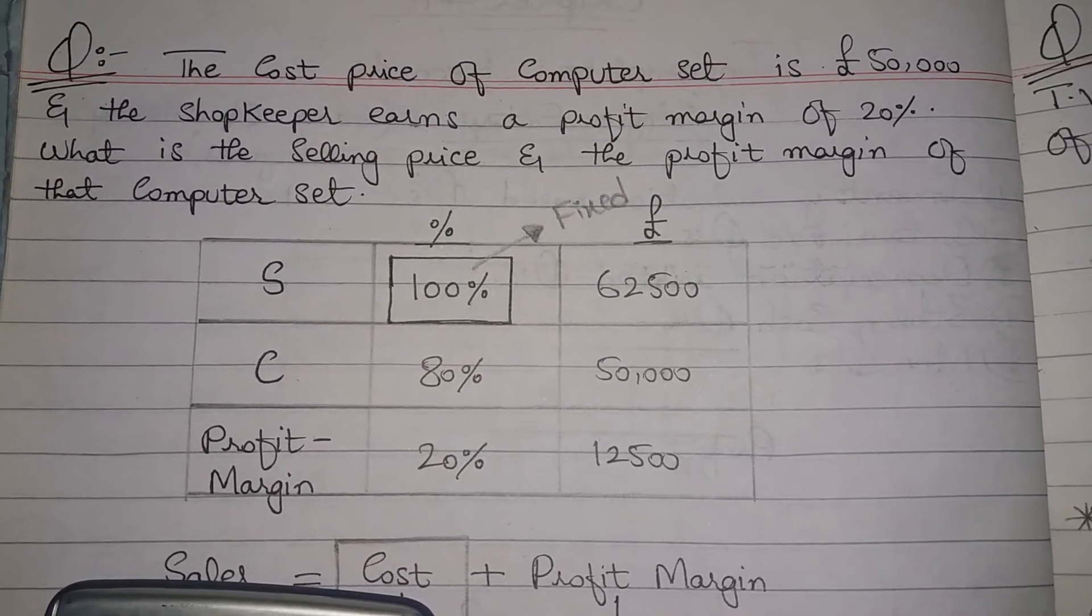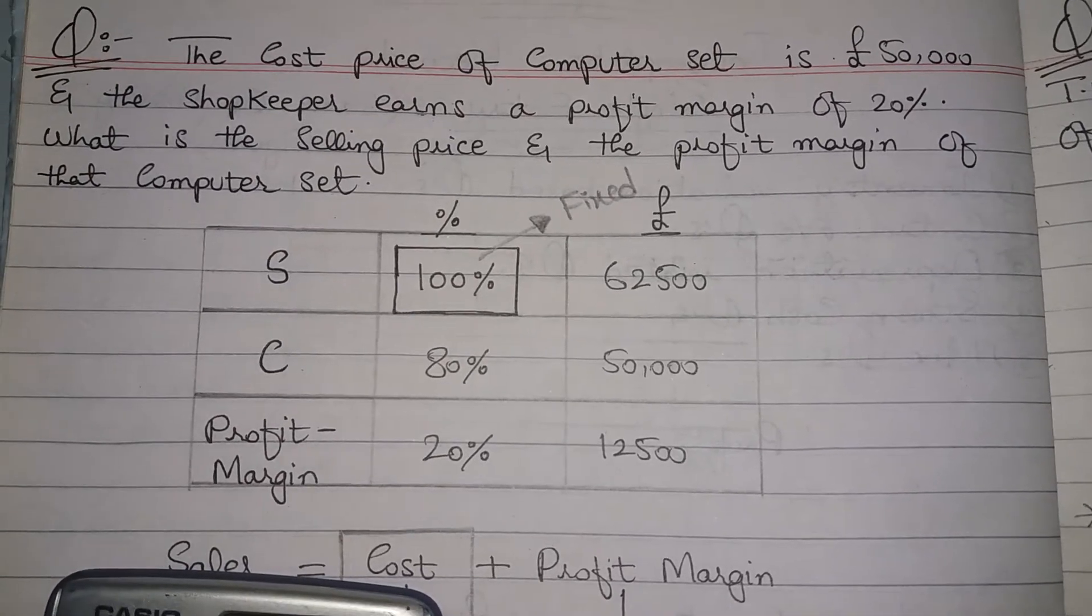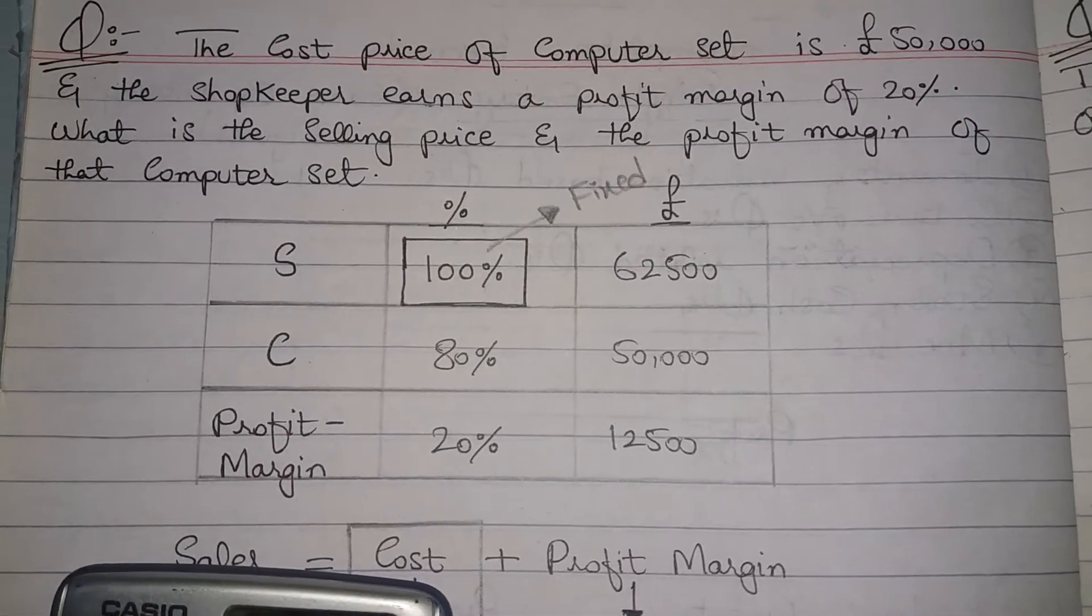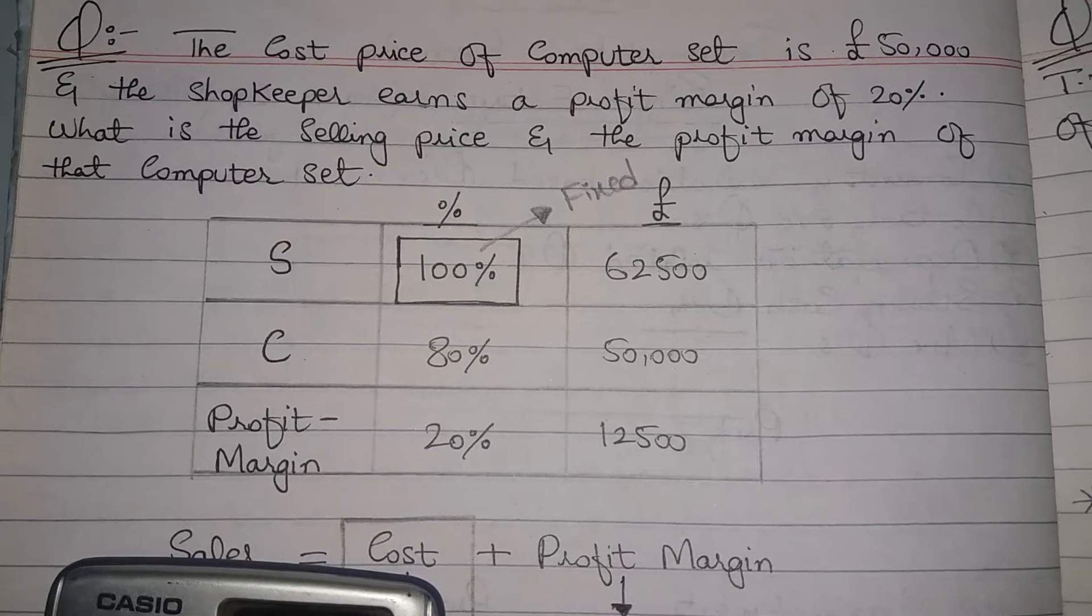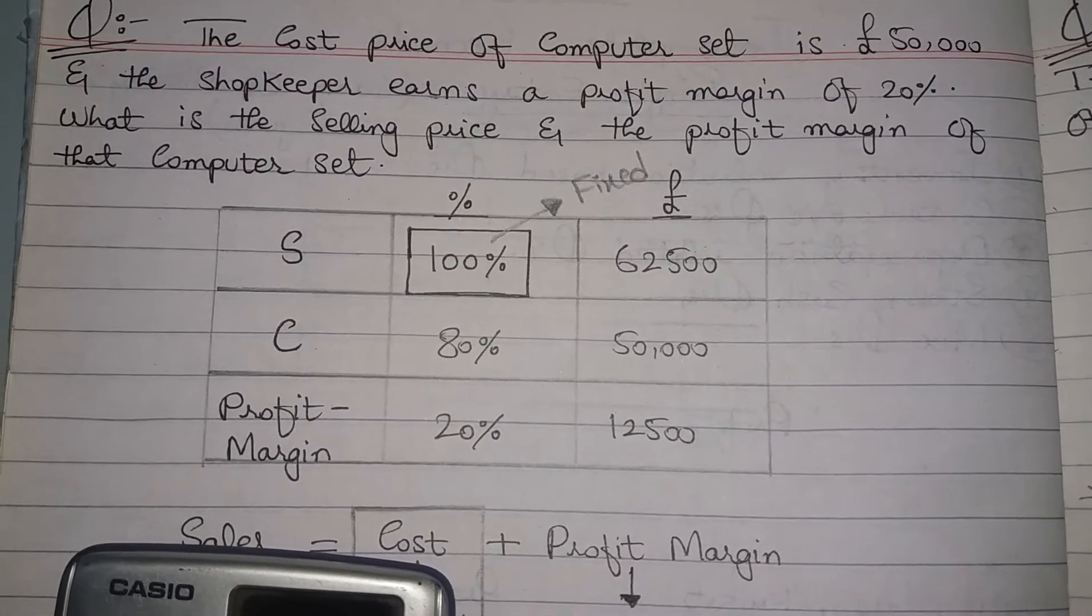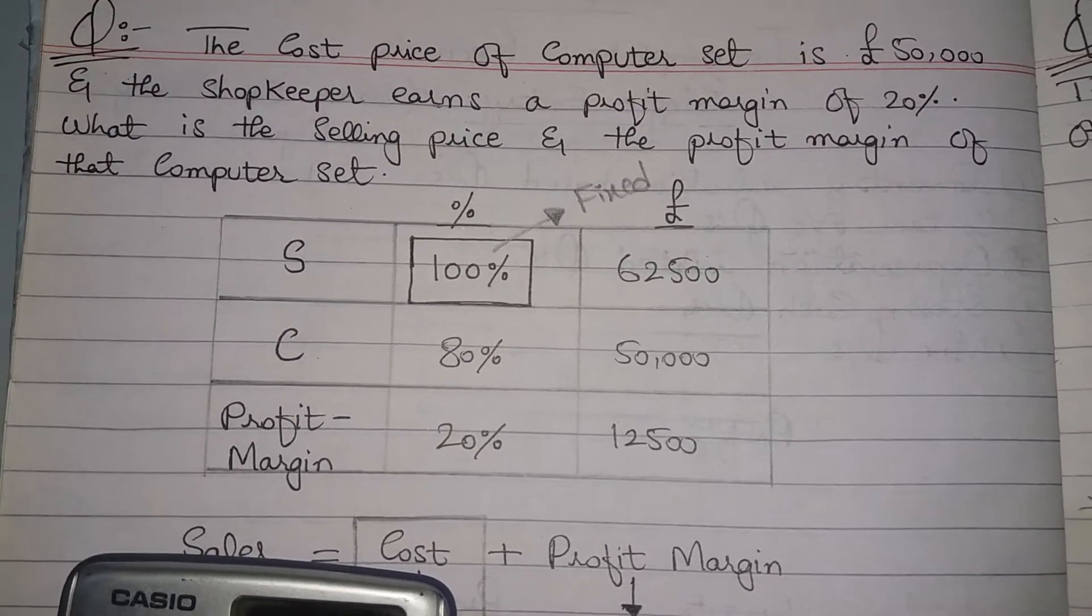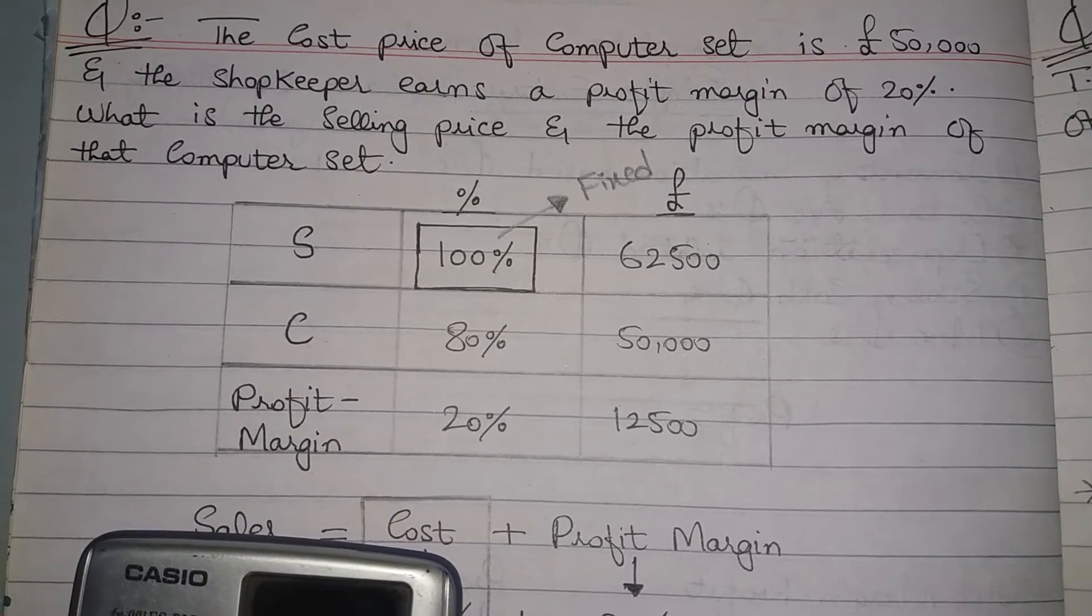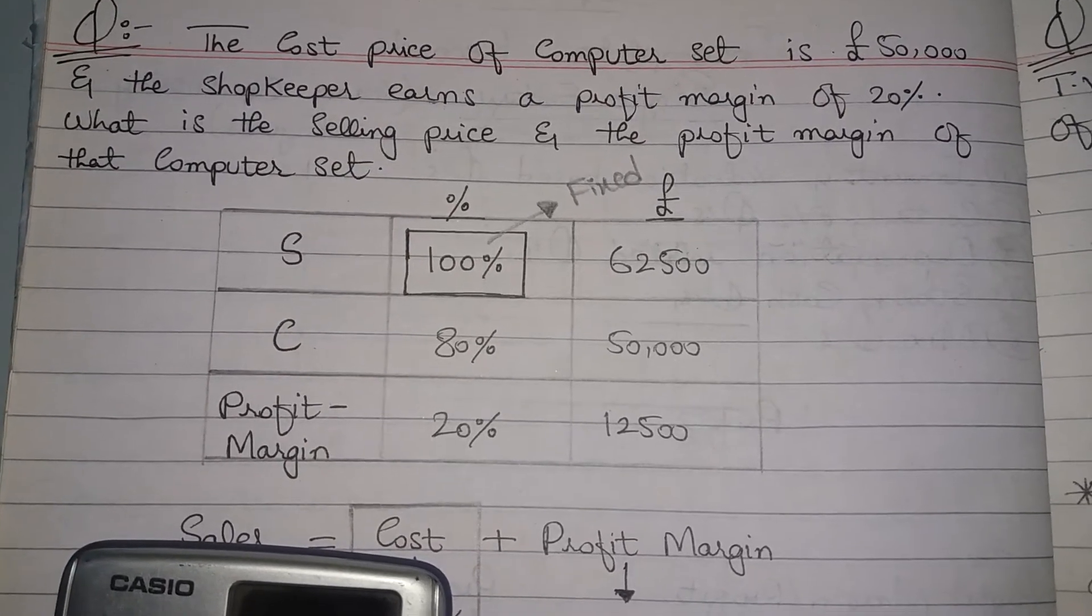The cost price of a computer set is £50,000 and the shopkeeper earns a profit margin of 20%. What is the selling price and the profit margin of that computer set? In order to calculate margin, always use SCP rule - that is Selling price, Cost, and Profit.